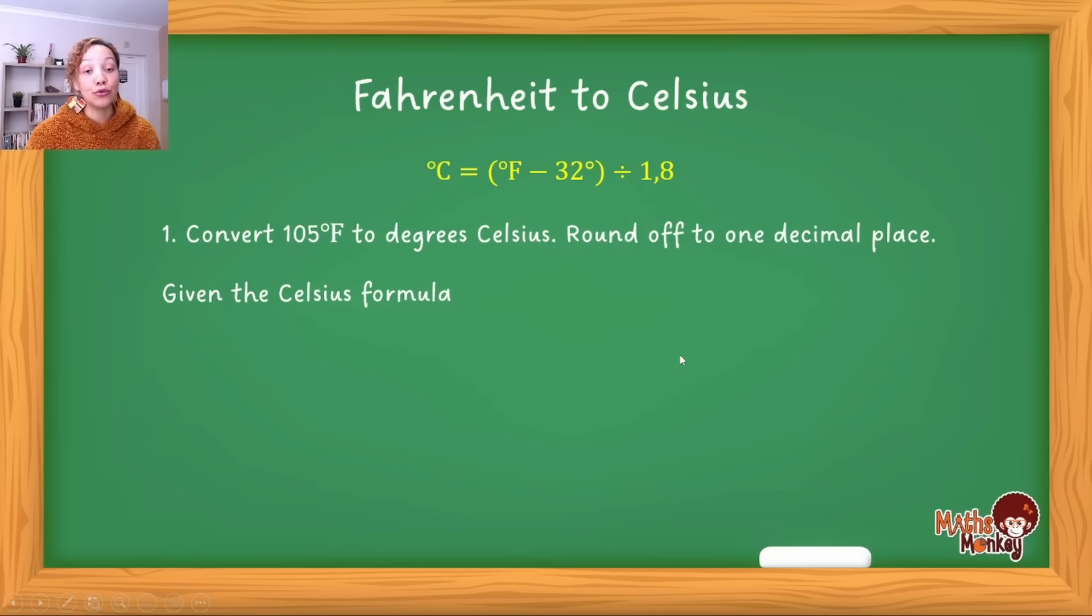I'm going to teach you how to do either one, because they can just give you the formula or give you the formula for the other unit and you have to work around it. First, let's say they give you the plain and simple formula where C is on the left. There's your formula, and now they want you to convert 105 degrees Fahrenheit.